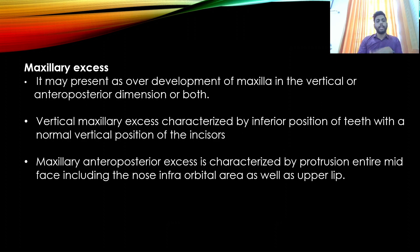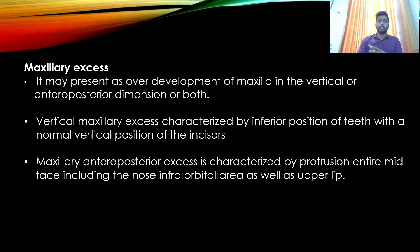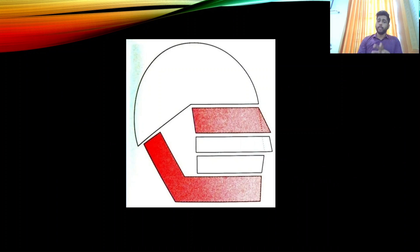In maxillary excess, there may be overdevelopment of the maxilla in the vertical or anteroposterior dimension or both. Vertical maxillary excess is characterized by inferior positioning of teeth with a normal vertical position of incisors. Maxillary anteroposterior excess presents as protrusion of the entire midface, including the nose, infraorbital area, and upper lip.